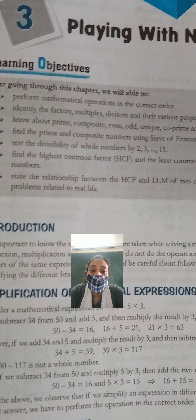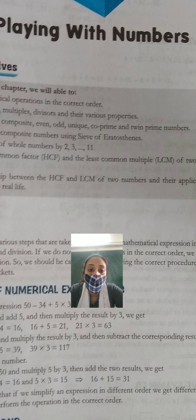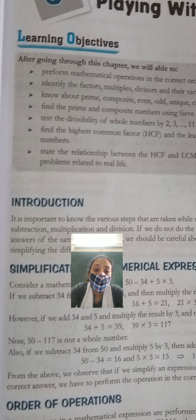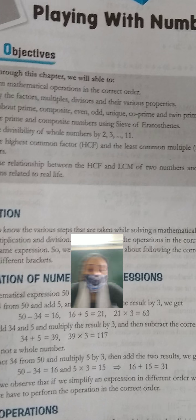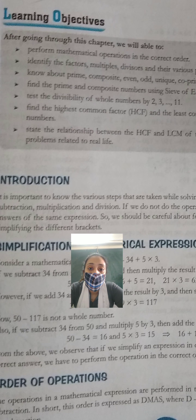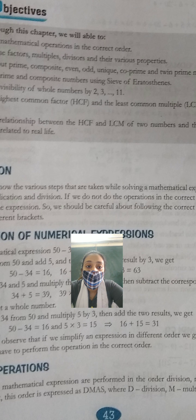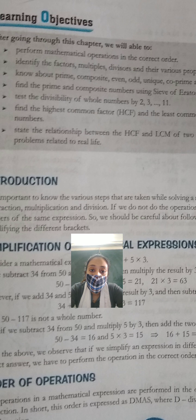Third is, know about prime, composite, even, odd, unique, co-prime and twin prime numbers. फिर हम लोग prime numbers, composite numbers, even, odd, unique numbers, co-prime, twin prime numbers — वो सब study करेंगे. फिर, find the prime and composite numbers using the Sieve of Eratosthenes. वो हम लोग use करेंगे prime and composite numbers ढूंढने के लिए.